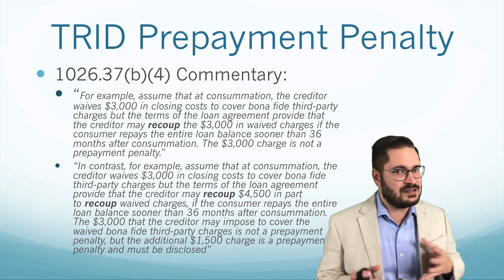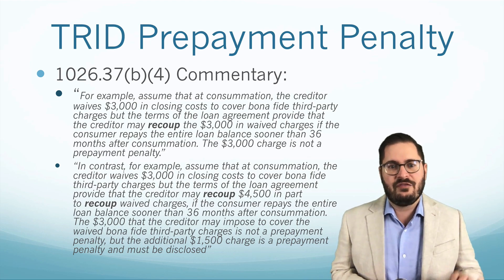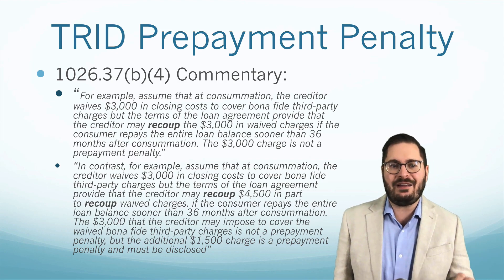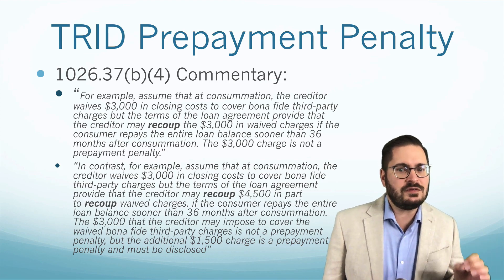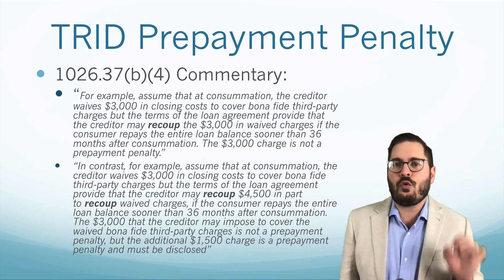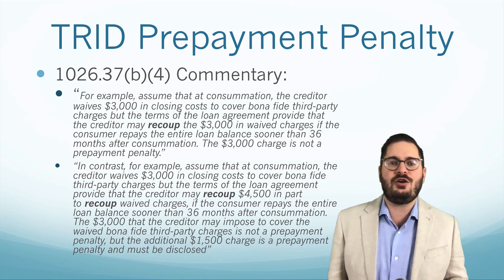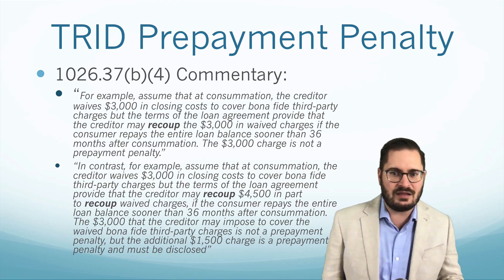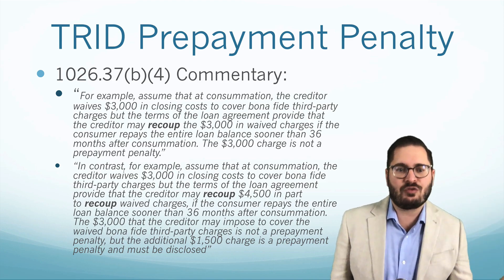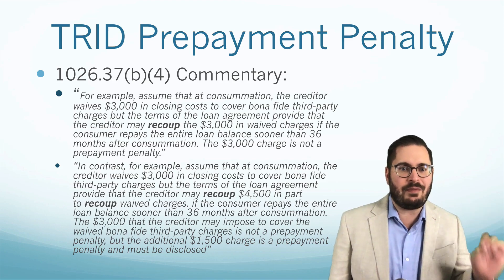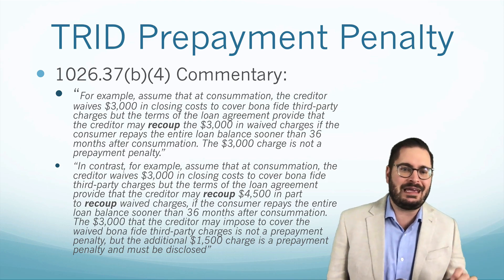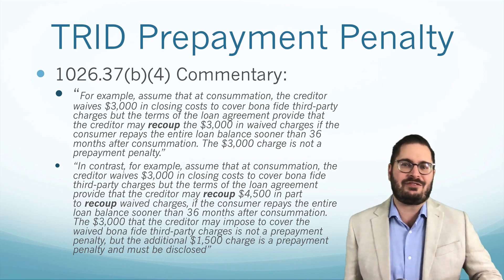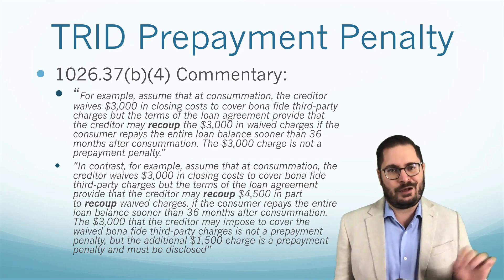Now it goes on — there are some instances where you may have to say 'yes.' In contrast, for example, assume that at consummation the creditor waives $3,000 in closing costs to cover bona fide third-party charges, but the terms of the loan agreement provide the creditor may recoup $4,500 in part to recoup waived charges if the consumer repays the entire loan balance sooner than 36 months after consummation. The $3,000 is not a prepayment penalty, but the additional $1,500 charge is a prepayment penalty — and therefore you would have to disclose that as a prepayment penalty on the loan estimate and closing disclosure.